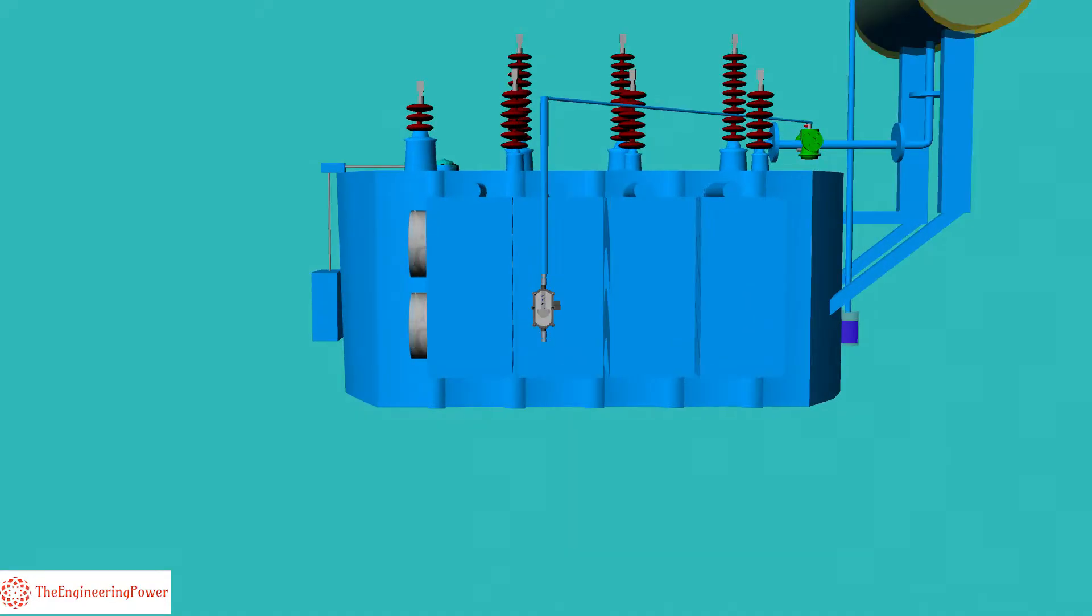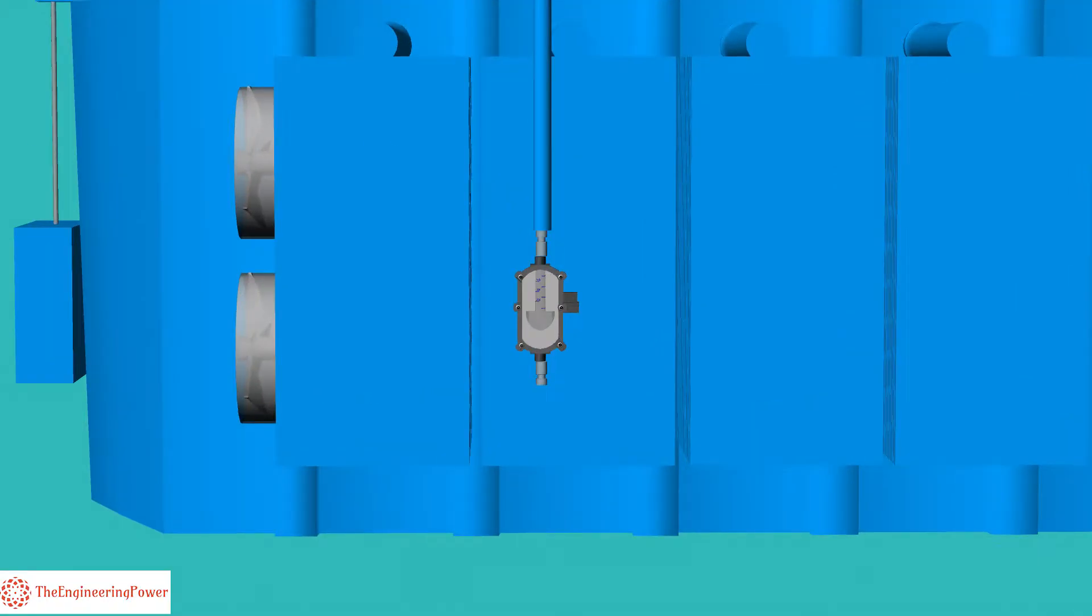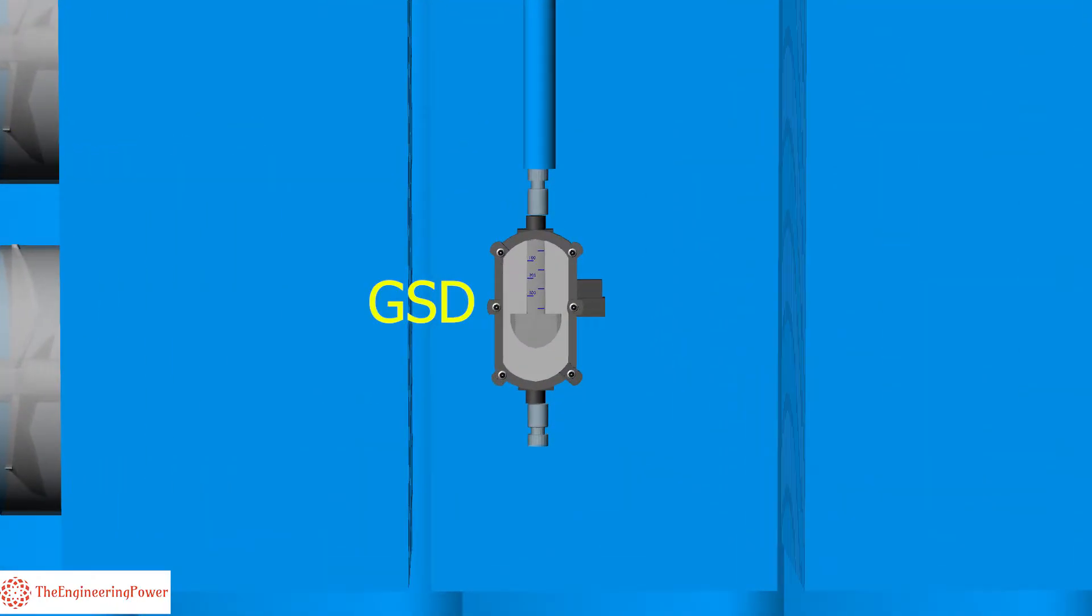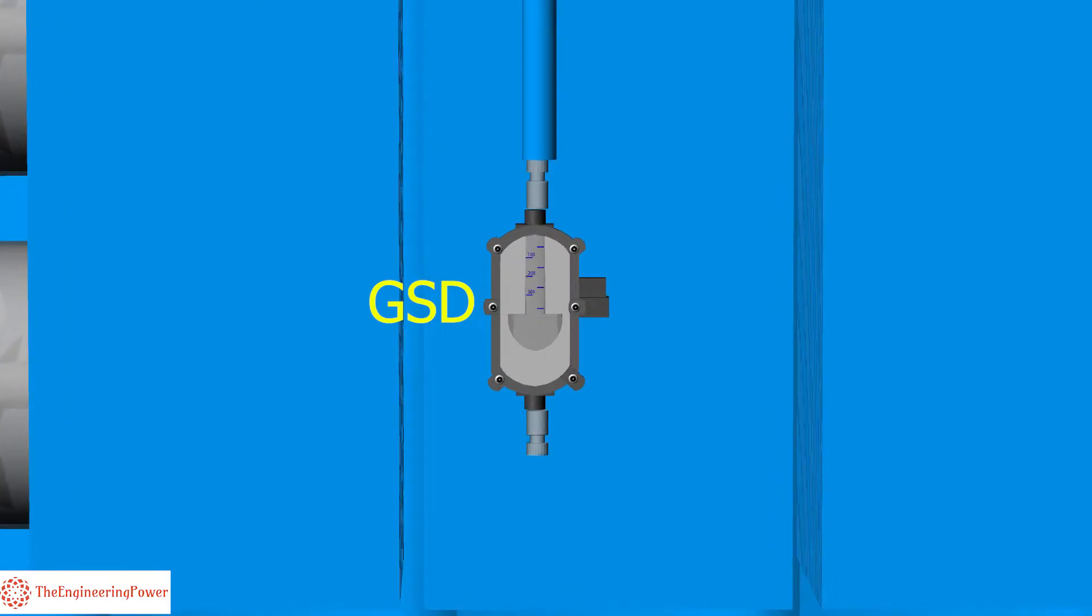These gases are collected in a special accessory of Buchholz relay known as gas collection device or simply GCD. GCD is installed on the side of the transformer which is easily approachable by a person on ground and is used to collect gas and oil samples from Buchholz relay comfortably.